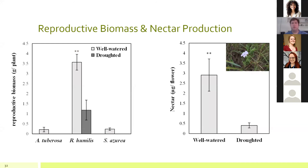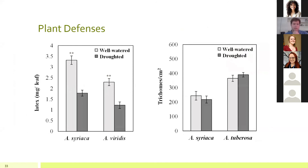For reproductive biomass, three species did flower during the drought. The only one amenable to full analysis was hairy wild petunia (Ruellia humilis), which produced much greater reproductive biomass under well-watered conditions. Taking that further, this species also produced significantly greater nectar under well-watered conditions, which makes sense given that water is the carrier for the sugars in nectar. Milkweeds produce a plethora of anti-herbivore defenses, including latex — both common milkweed and green antelope horn produced significantly greater latex under well-watered conditions, since water is a major constituent of latex.